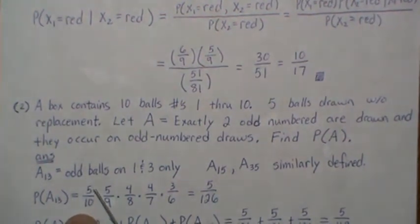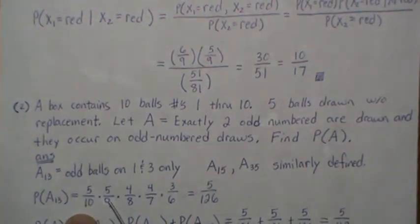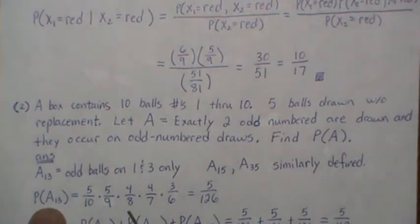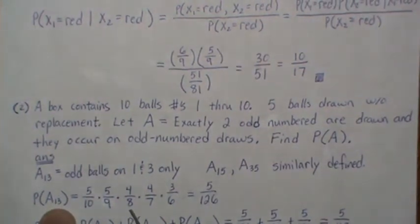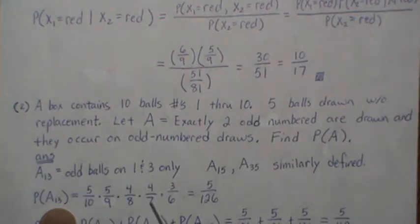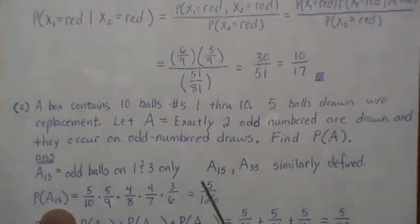The probability of A_{1,3} — drawing an odd ball first, then an even (5 out of 9 remaining even), then an odd on draw 3 (4 out of 8), then even (4 out of 7), then even again (3 out of 6) — gives 5 over 126.